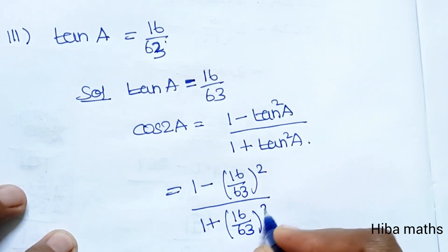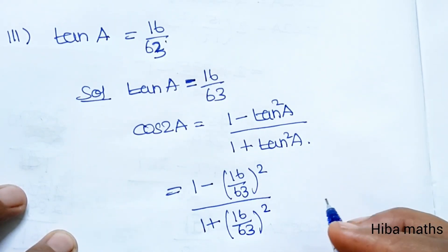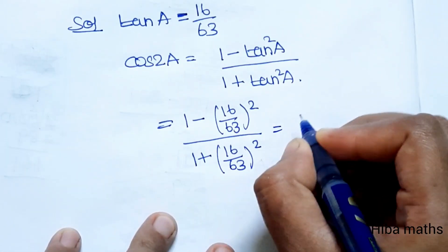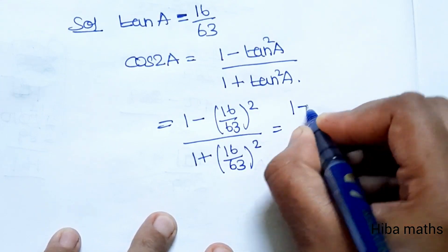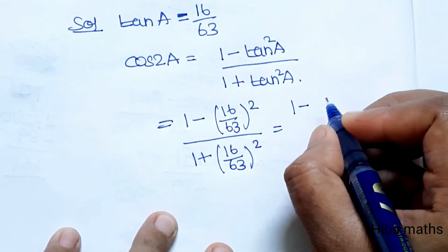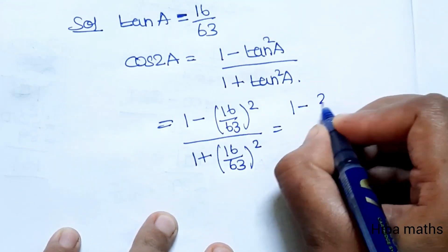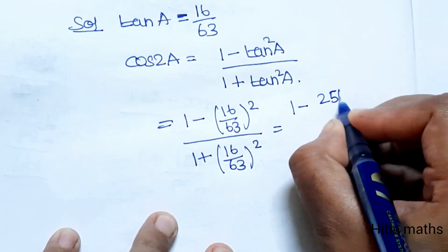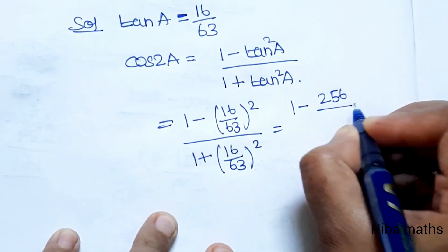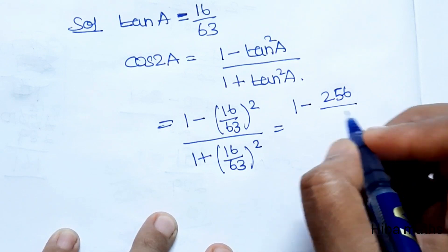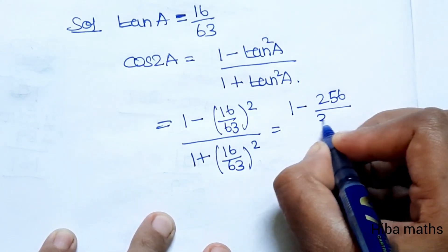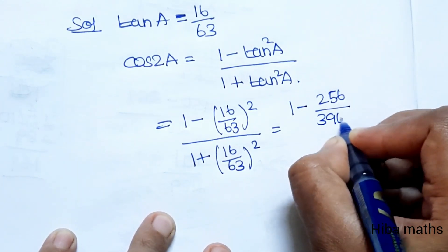Substituting tan A = 16/63: cos 2A = (1 − (16/63)²) / (1 + (16/63)²) = (1 − 256/3969) / (1 + 256/3969) = (3969 − 256)/3969 divided by (3969 + 256)/3969 = 3713/4225.